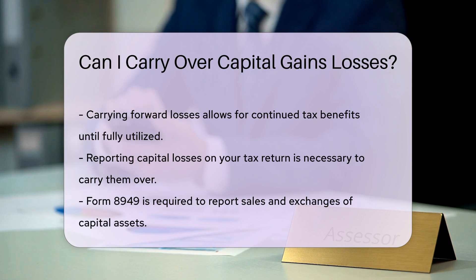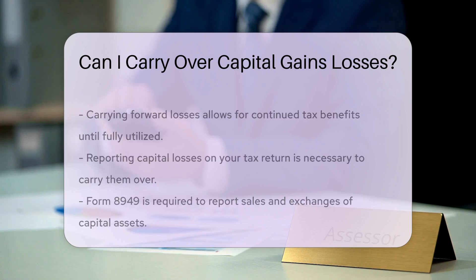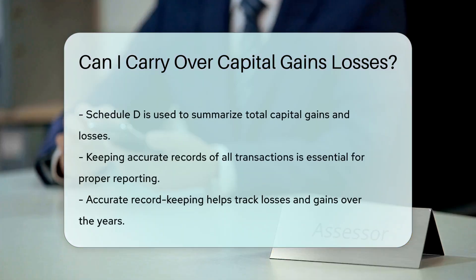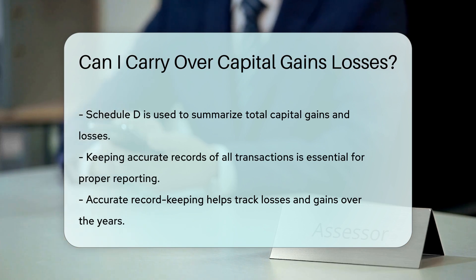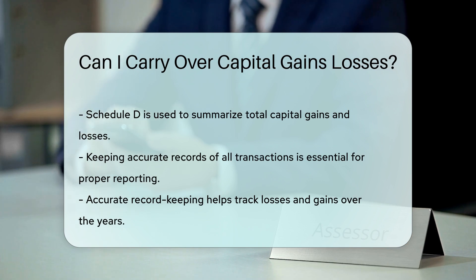To carry over losses, you must report them on your tax return. The IRS requires you to use Form 8949 to report sales and exchanges of capital assets. Additionally, you will use Schedule D to summarize your capital gains and losses. It's essential to keep accurate records of all transactions to ensure proper reporting. This will help you track your losses and gains accurately over the years.